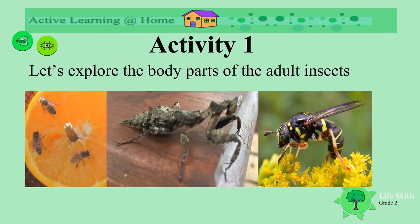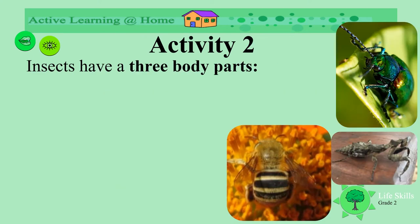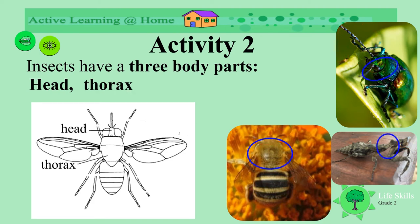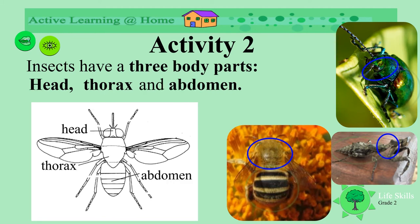Let's explore the body parts of adult insects. Insects have three body parts: a head, a thorax — which is in the middle and to which the wings and legs are connected — and the abdomen.